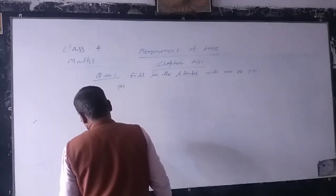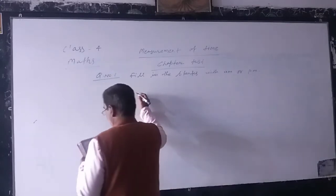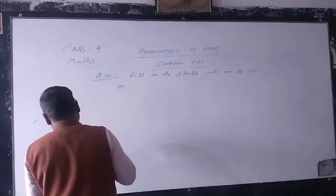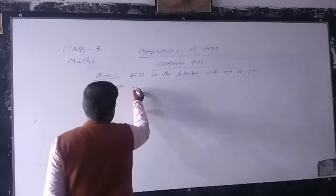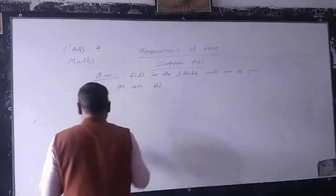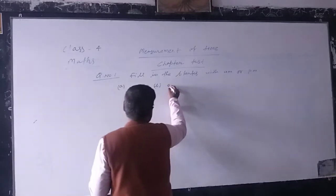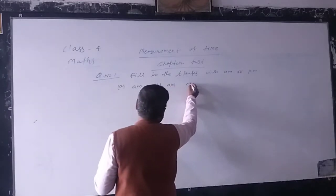Anur wakes up at 6. Here we write A.M. B. Mala goes to school at 7:30. Also you write A.M.